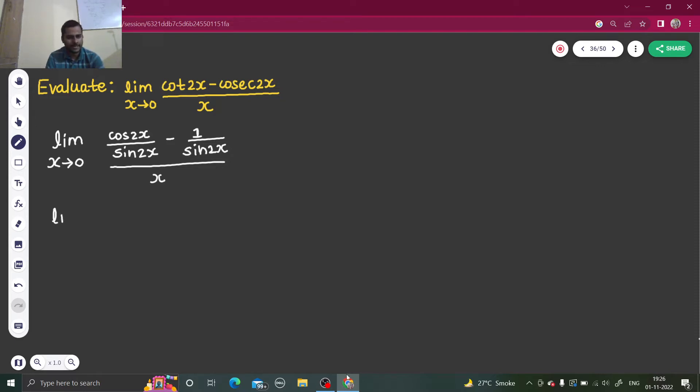So I can take the LCM in numerator. So I will get limit x tending to 0: cos 2x minus 1 divided by sine 2x, and whole divided by x.